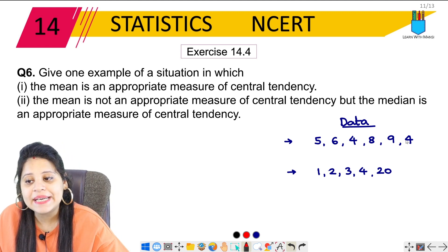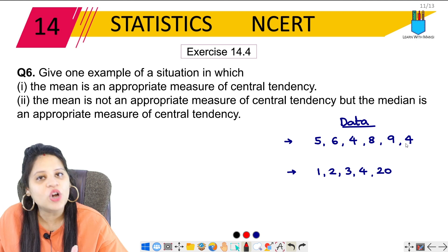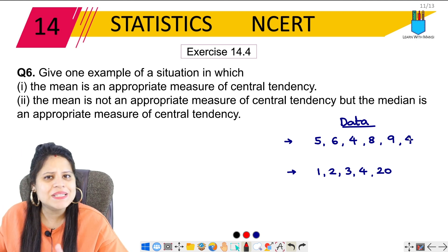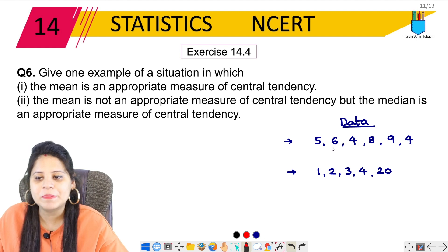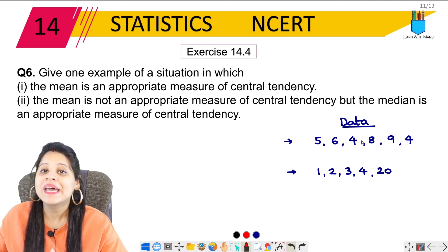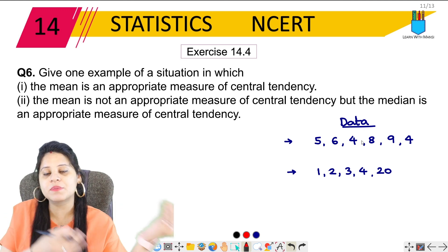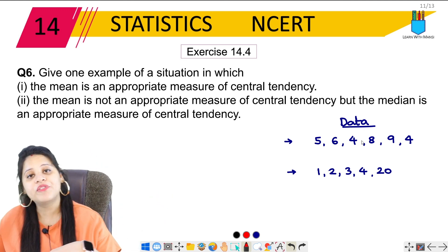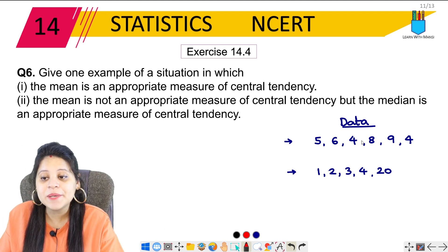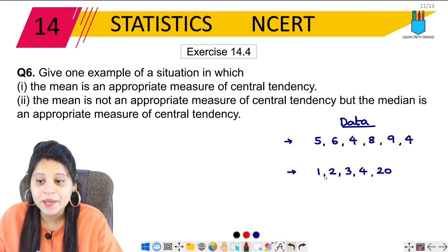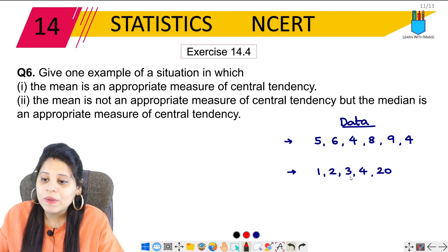Now, let's talk about the first data: 5, 6, 4, 8, 9, 4. If you arrange this in ascending order, you will see that there is no more gap in the data: 4, 5, 6, 8, 9. If we look here, 1, 2, 3, 4, and 20, there is a big gap in this case.